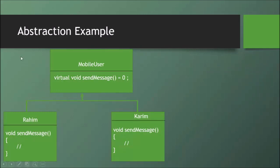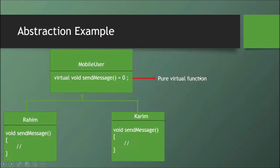This is a perfect example. Suppose there is a class for a mobile user, and in this class we declare a pure virtual function. This function has no body. But if another class uses this class through inheritance, that class can provide the body — for example, sending a message to a specific user. This makes the class an abstract class.